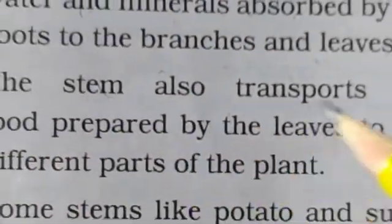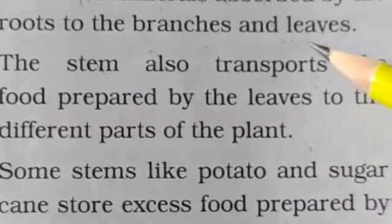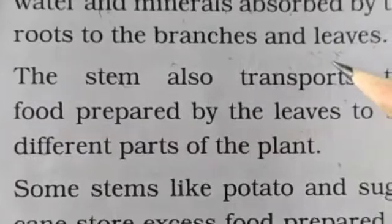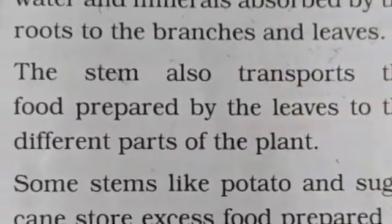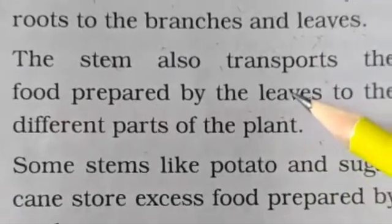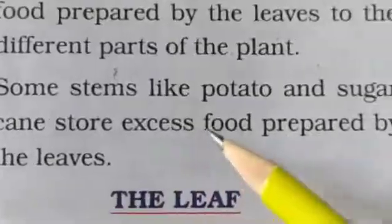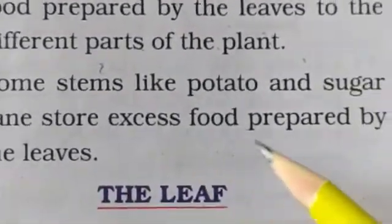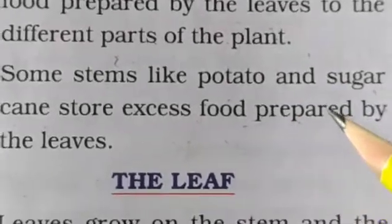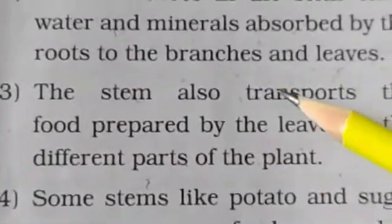The stem also transports the food prepared by the leaves to the different parts of the plant. The roots absorb water and minerals, and the stem supplies them to the branches and leaves. The third function: the stem transports food that the leaves prepare. The fourth function: some stems like potato and sugar cane store excess food prepared by the leaves. These four points are the functions of the stem.